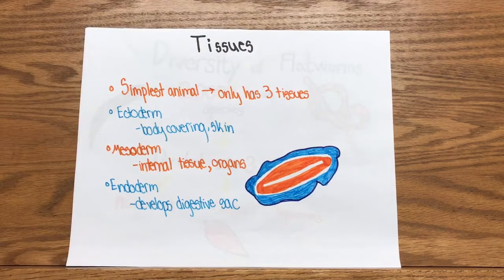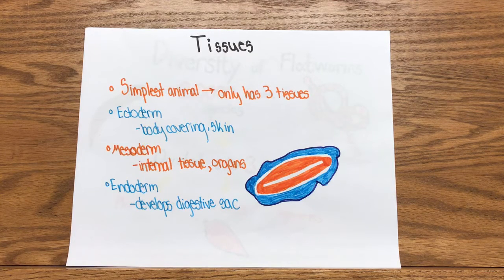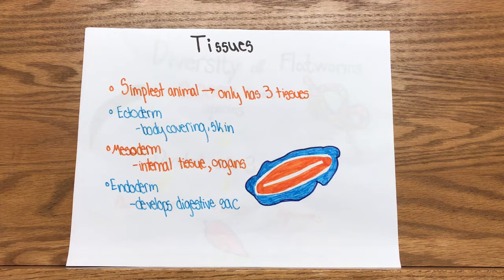There are three types of tissues: the ectoderm, the mesoderm, and the endoderm. The ectoderm is the body covering or the skin, the mesoderm is the internal tissues or the organs, and the endoderm is the developing digestive sac.